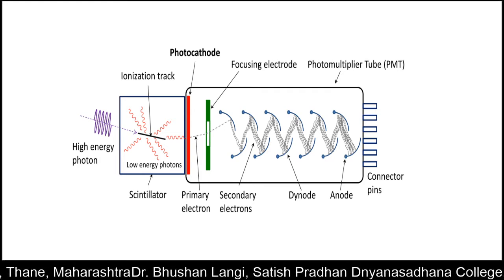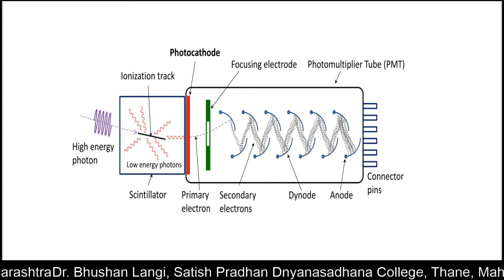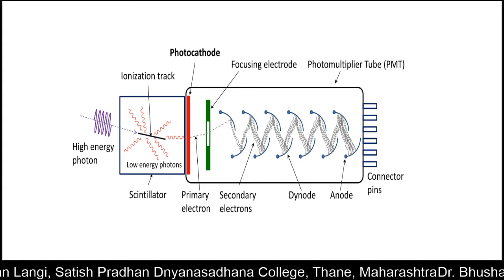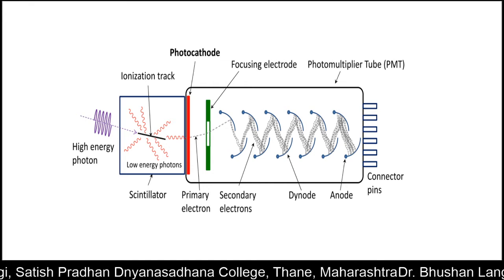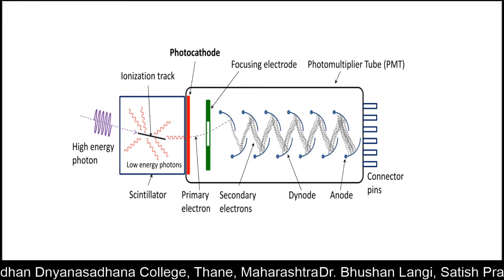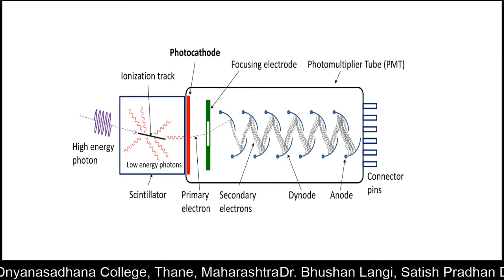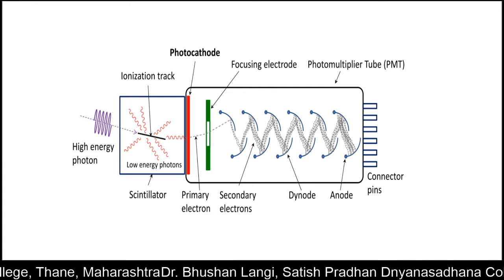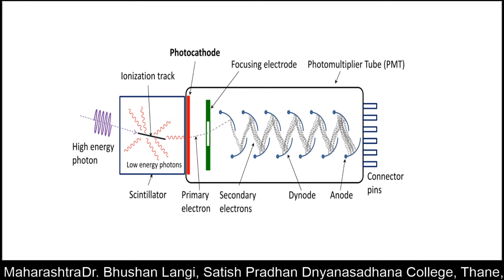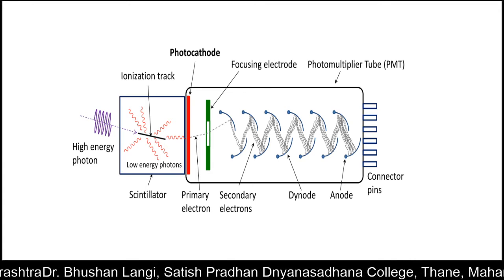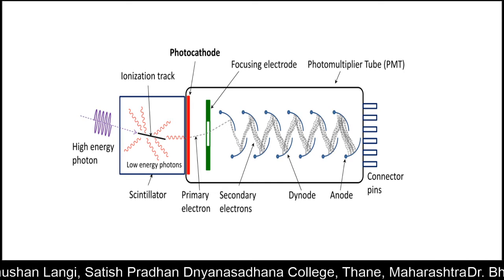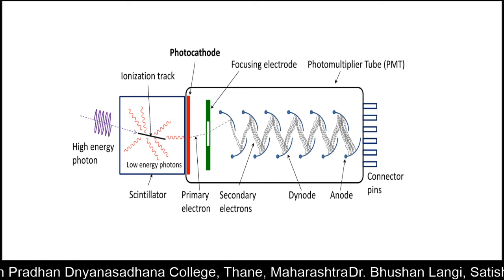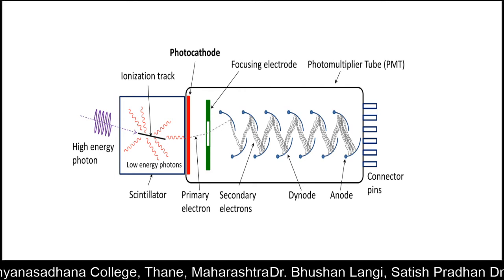These 10 secondary electrons are incident on the next dynode. At each dynode, every electron produces 10 new electrons, and they are incident on the successive dynodes — this process continues simultaneously. Finally, all these electrons are collected by the anode.